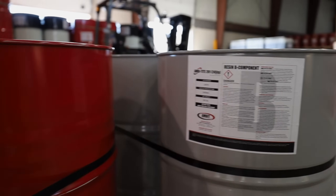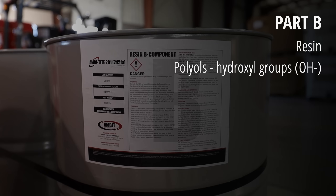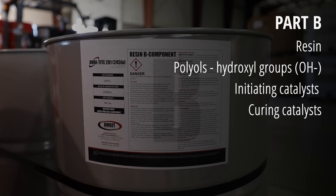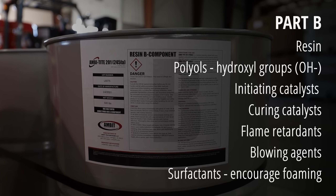Part B is a proprietary blend of chemicals that provides unique properties in the foam. It contains a polyol, which is an organic compound containing hydroxyl or OH⁻ groups. It also contains initiating catalysts which help the reaction to occur, curing catalysts that allow the reaction to continue to its completion, flame retardants that prevent the start or slow the growth of fire, blowing agents that form the gaseous part of the foam, and surfactants that reduce the surface tension of a liquid and encourage foaming.